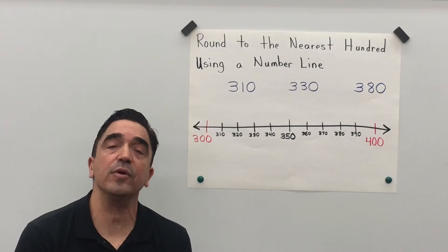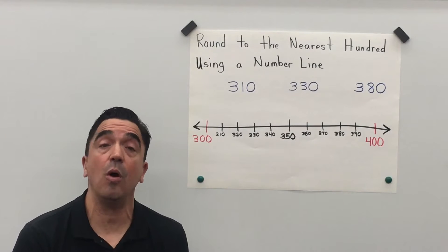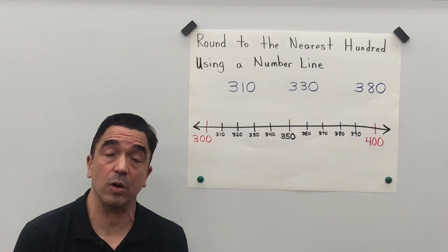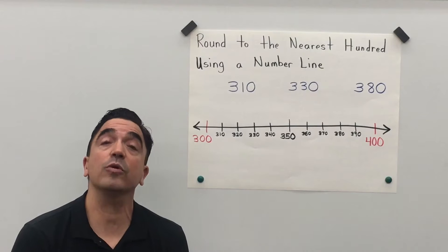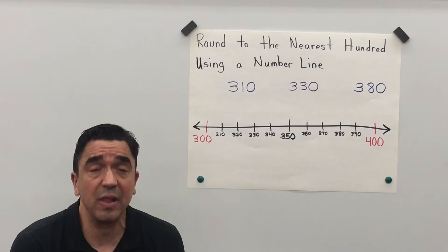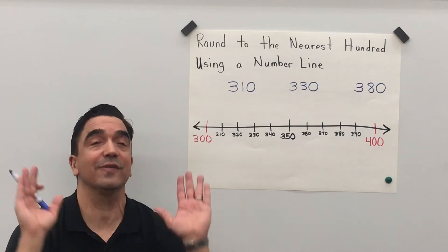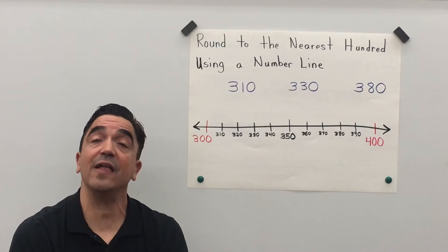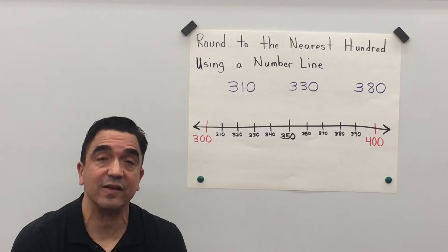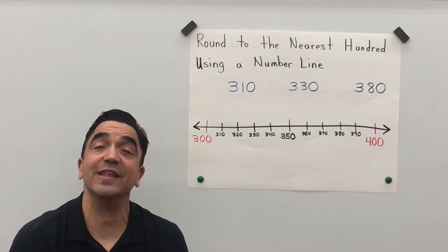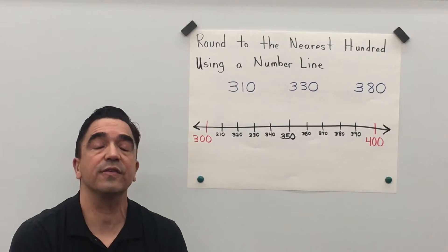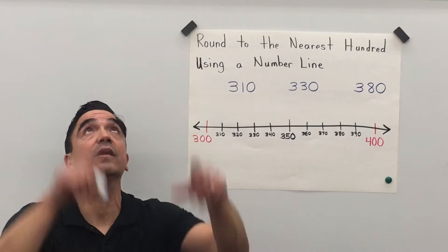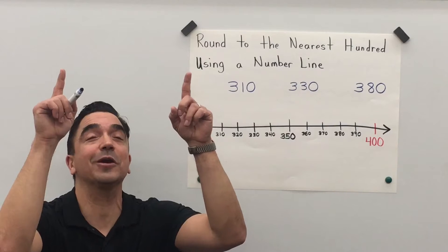If the number in the tens place is a zero, one, two, three, or four, it will tell the number in the hundreds place to stay the same. If the number in the tens place is a five, six, seven, eight, or nine, then it'll tell the number in the hundreds place to go up.